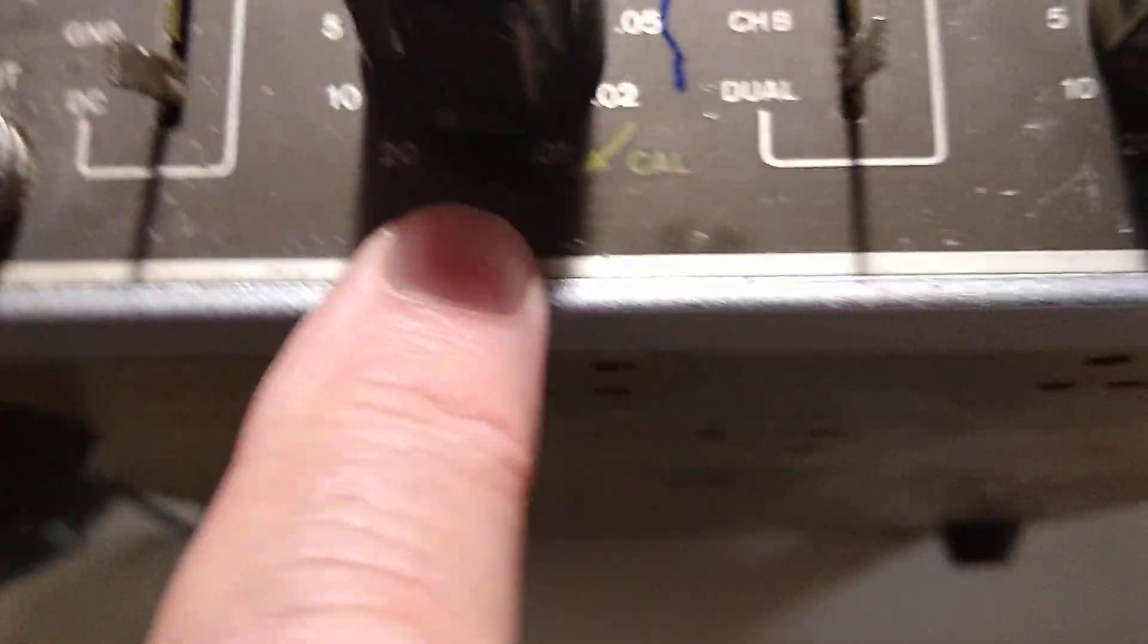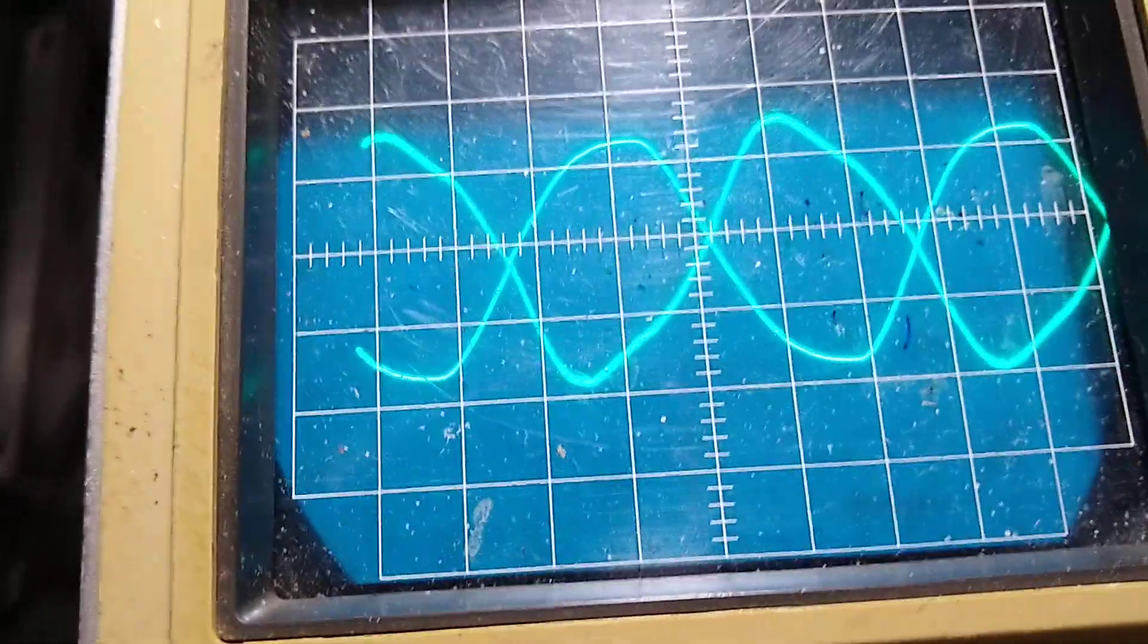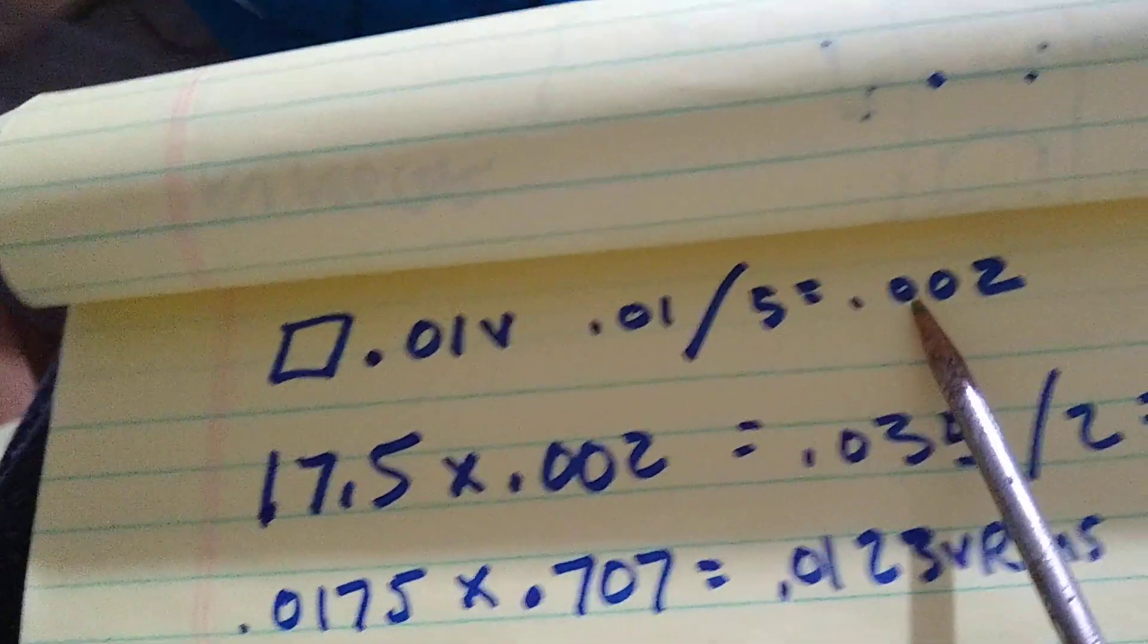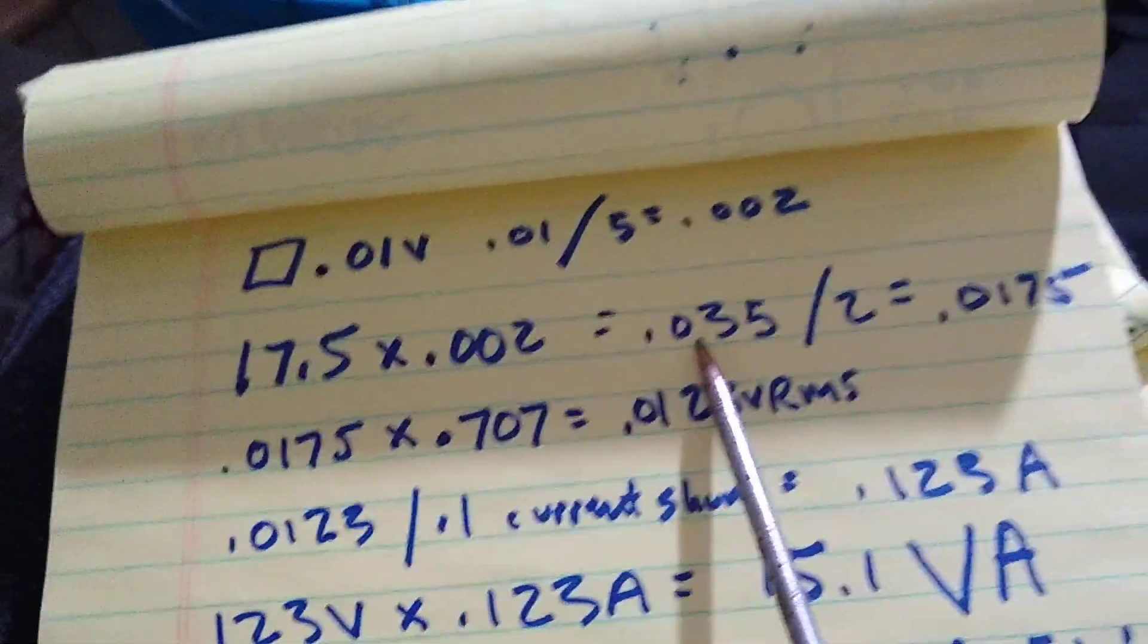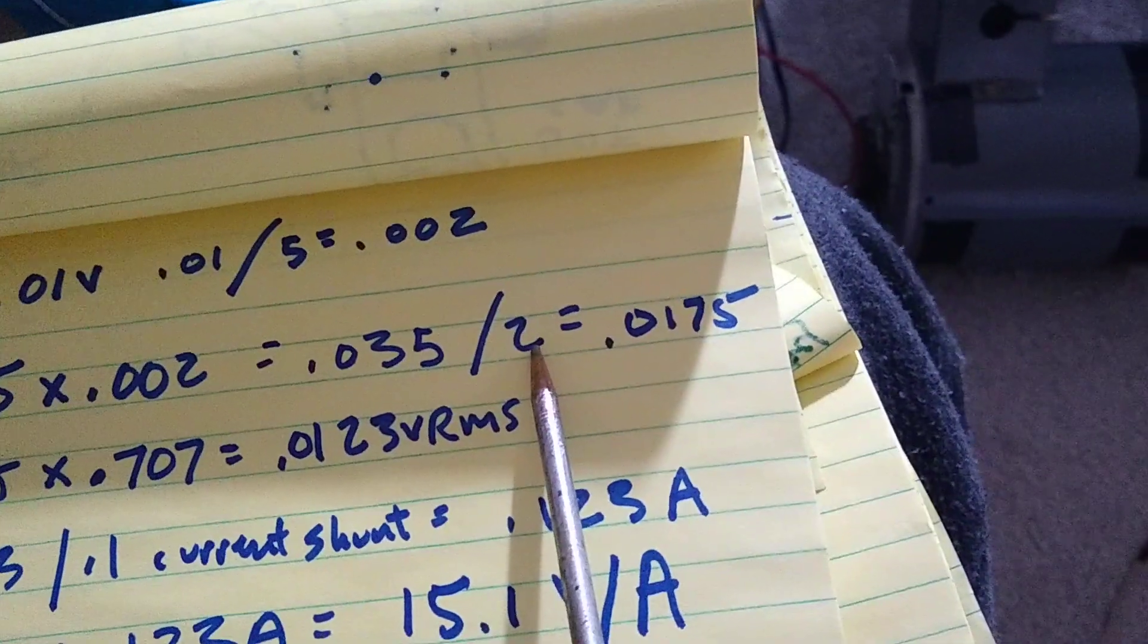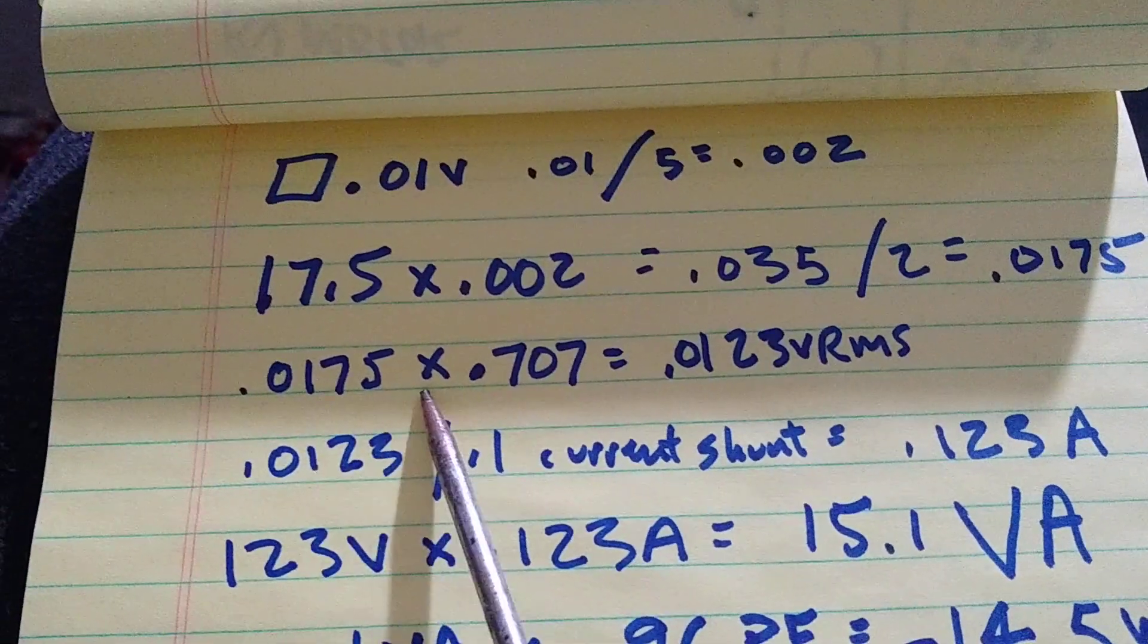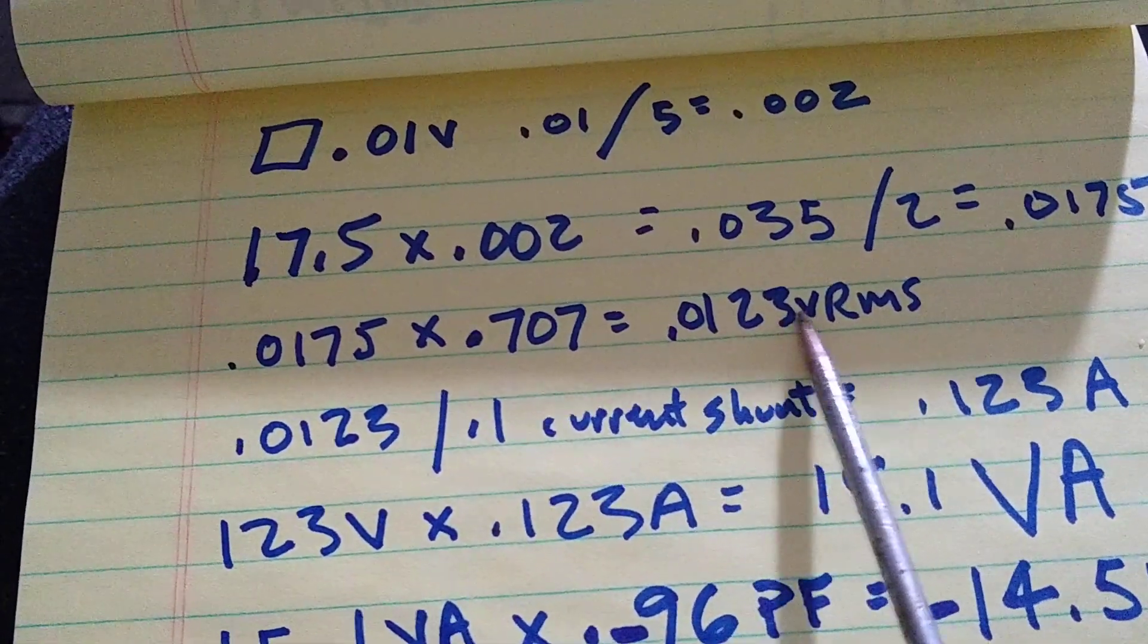We're in the 0.01, so that means each of those is worth 0.002 volts. So here's the math. 0.01 volts square divisions on the scope. 0.01 divided by 5 is 0.002. That's what I was just saying. 17 and a half spaces peak to peak, times 0.002 is 0.035 divided by 2, because this is peak to peak. You only want what's above the zero line to give you AC. And it's 0.0175. 0.017 times 0.707 gives you RMS.